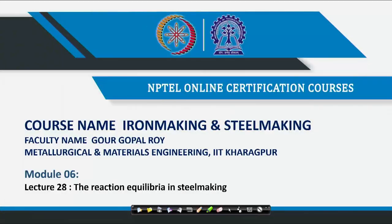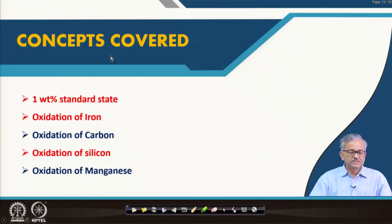Welcome. This is module 6, week 7, lecture number 28. We have just started steelmaking. I have talked about a brief history of steelmaking, the slag structure, and important properties of the slag like oxidation property, viscosity, and basicity. Now, in this lecture, we will talk about some very important reactions relevant for steelmaking and their reaction equilibria.